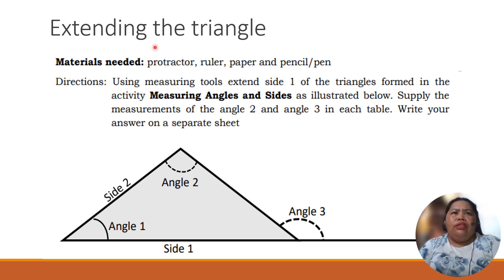Now, in extending the triangle, you still have your protractor, your ruler, your paper, and your pencil or pen. So, using measuring tools, extend one side of the triangle formed in the activity, the measuring angles and sides as illustrated below. Then, supply the measurement of angles in the table. Write your answer. So we have here table one. We just extend the side here. And then we have the interior angles.